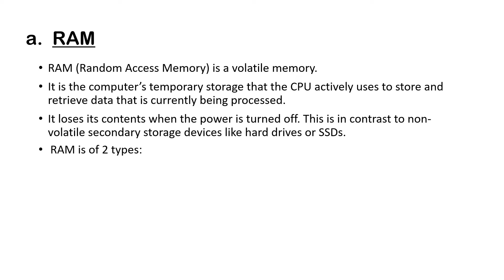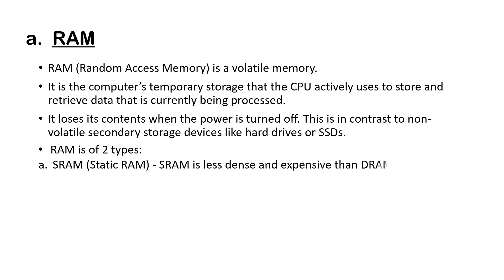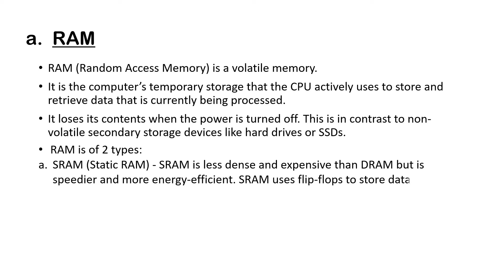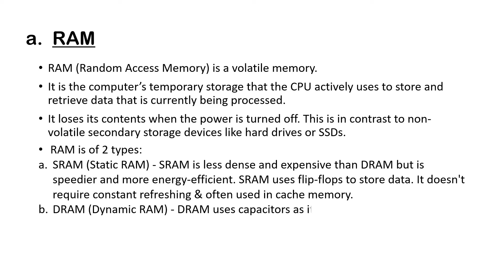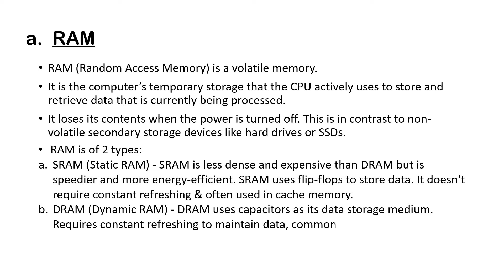RAM is of two types: SRAM and DRAM. SRAM is Static RAM and DRAM is Dynamic RAM. SRAM is less dense and expensive than DRAM but is speedier and more energy efficient. SRAM uses flip-flops to store data, doesn't require constant refreshing, and is often used in cache memory. DRAM uses capacitors as its data storage medium and requires constant refreshing to maintain data; it is commonly used in most computer systems.